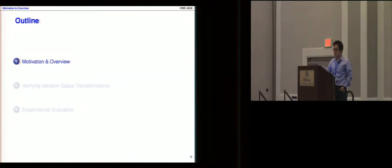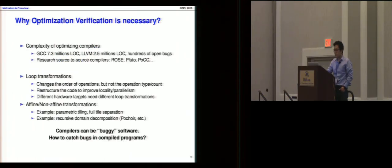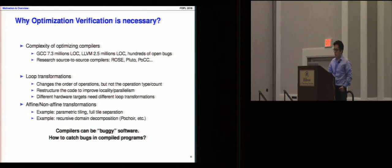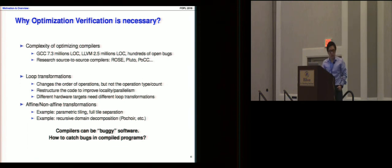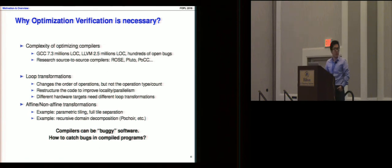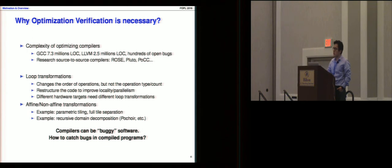I would first like to introduce the motivation section. Optimizing compilers are interesting — they improve the performance of transformed programs, but they are also complex. A widely distributed compiler like GCC has 7.3 million lines of code and involves handling open bugs. There are also important research compilers like the Rose compiler, developed by Lawrence Lab.